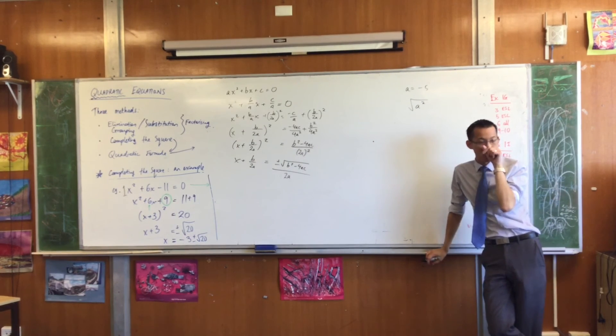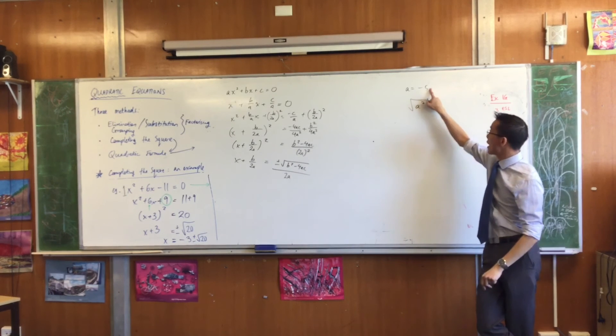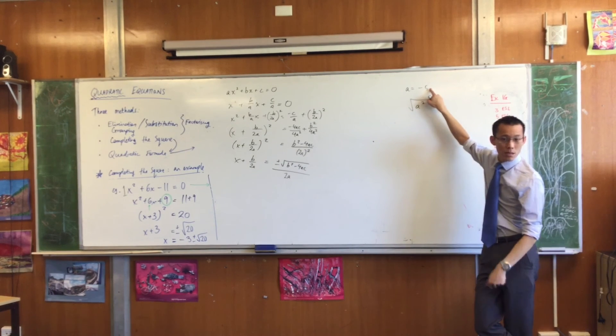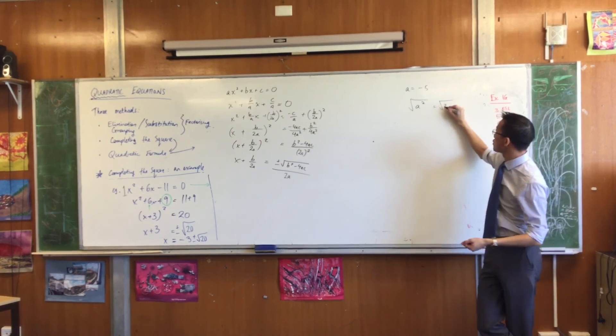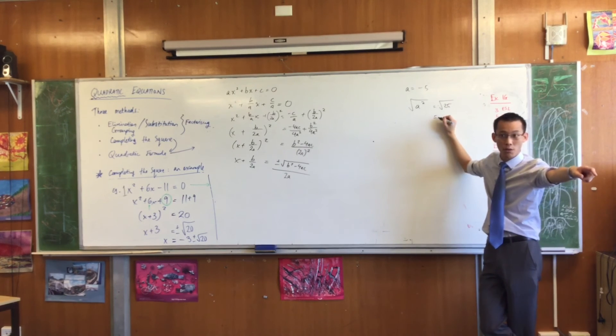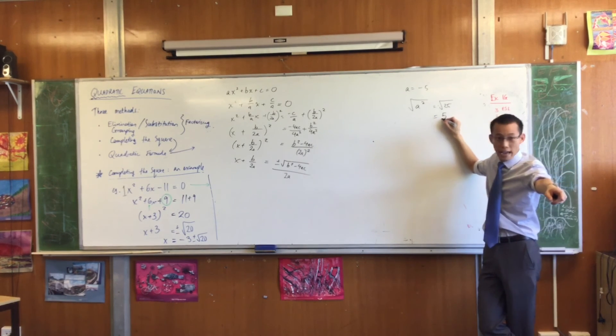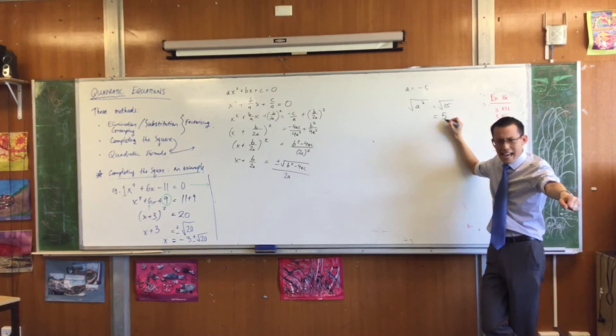Do it one step at a time. You square it and it becomes 25, and then you take the square root, and as we were just pointing out because of x question before, you get 5. That's not a, is it?